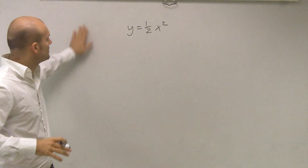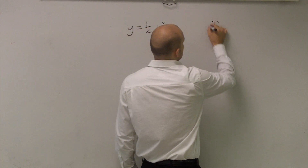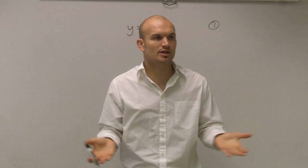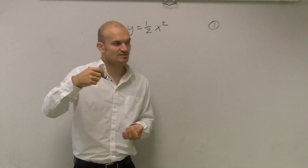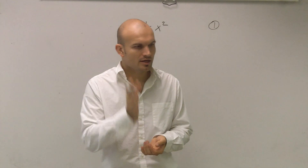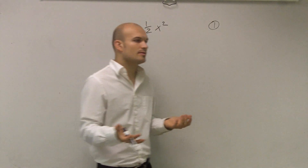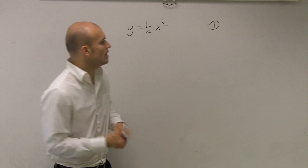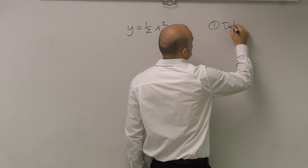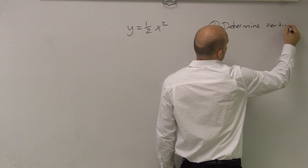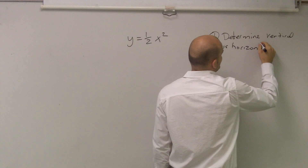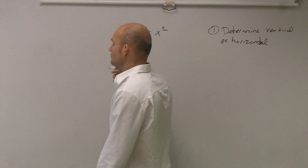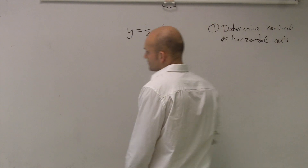So for this problem, the first thing I want to do — and if you guys just want to write down the steps, these will be very helpful. One thing you guys have to remember is a parabola. We've usually just been working with parabolas that have been vertical, that have a vertical axis of symmetry. Now we're also going to be working with horizontal parabolas as well. So number one, the first thing we need to do is determine if we're going to have a vertical or horizontal axis of symmetry.